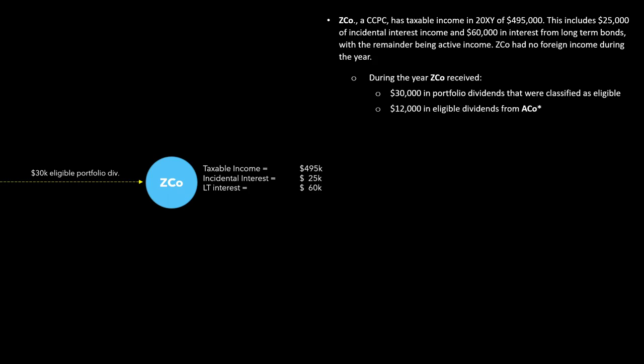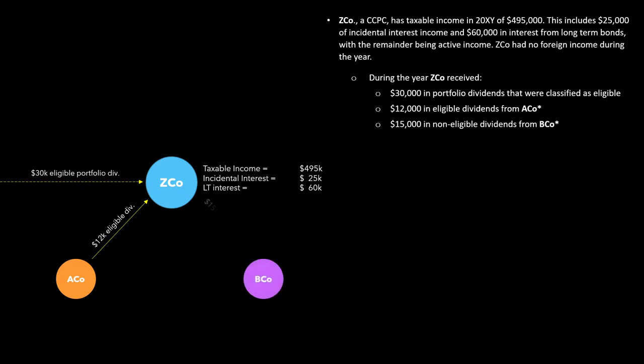They received $12,000 in eligible dividends from ACO. Let's introduce ACO on our picture — there's the $12,000 eligible dividend, shown with a solid yellow line to indicate that ACO and ZEDCO are connected. They also received $15,000 in non-eligible dividends from BCO, shown with a green solid line. Note that ACO and BCO are wholly owned subsidiaries of ZEDCO, so they certainly hit the 10% threshold and are connected corporations.